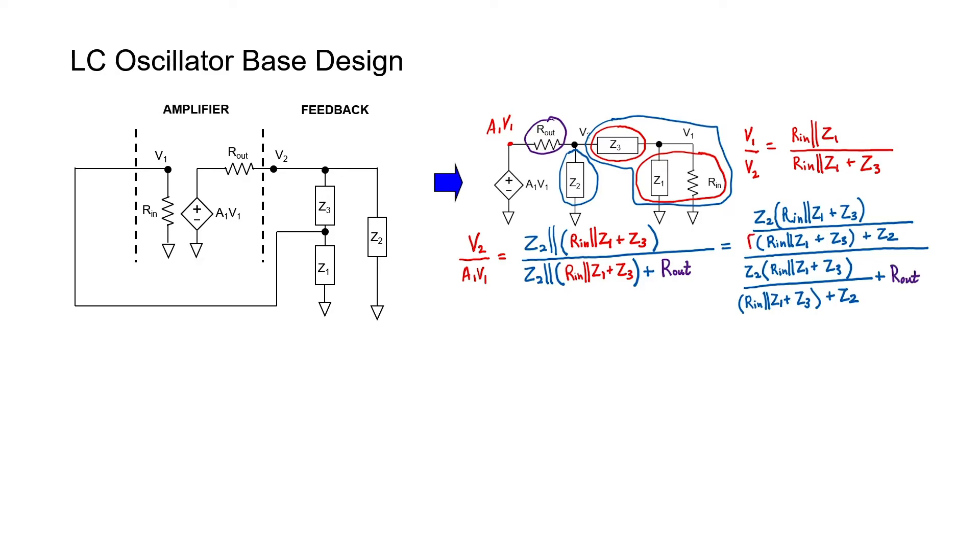In order to simplify this expression, I'm going to multiply every term times what we have in red brackets. I'm going to move A1 to the right side of the equation too.